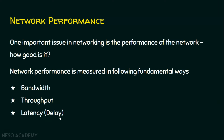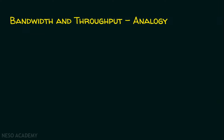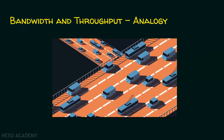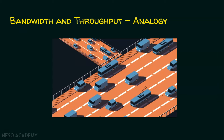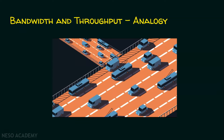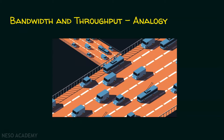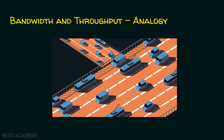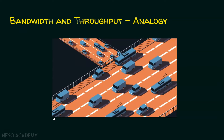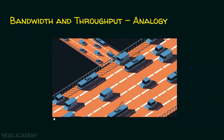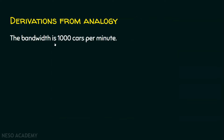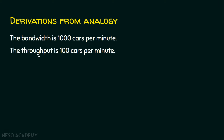Let's start with an analogy for bandwidth and throughput. Imagine a highway which is designed to transmit 1000 cars per minute from one end to another. However, if there is congestion on the road, this figure may be reduced to 100 cars per minute. The highway is actually capable of handling 1000 cars per minute, but in reality, due to congestion, it may handle only 100 cars per minute. In this analogy, the bandwidth is 1000 cars per minute, but due to congestion, the throughput is 100 cars per minute — bandwidth is the capability, throughput is the reality.